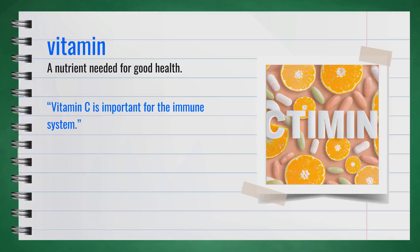The word vitamin, spelled V-I-T-A-M-I-N, is a noun. It refers to a nutrient needed for good health. A synonym for vitamin is supplement. For example, vitamin C is important for the immune system. In summary, a vitamin is a nutrient needed for good health.